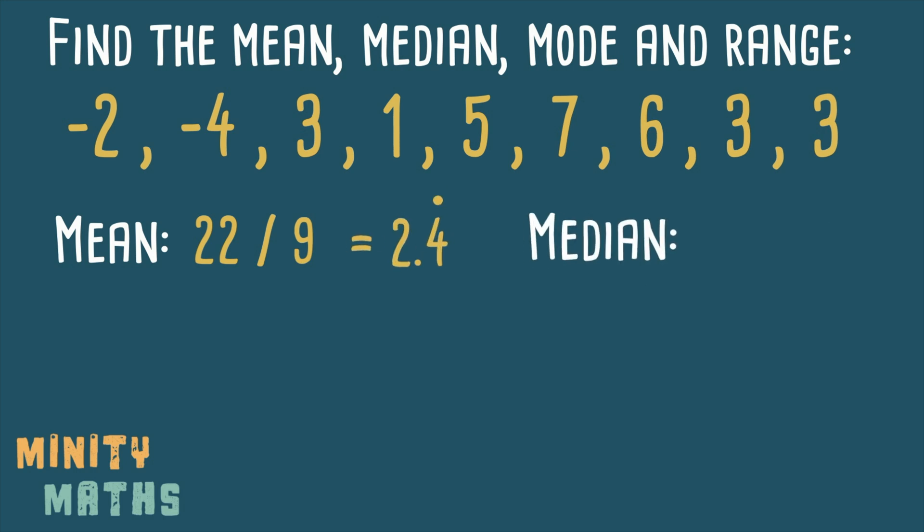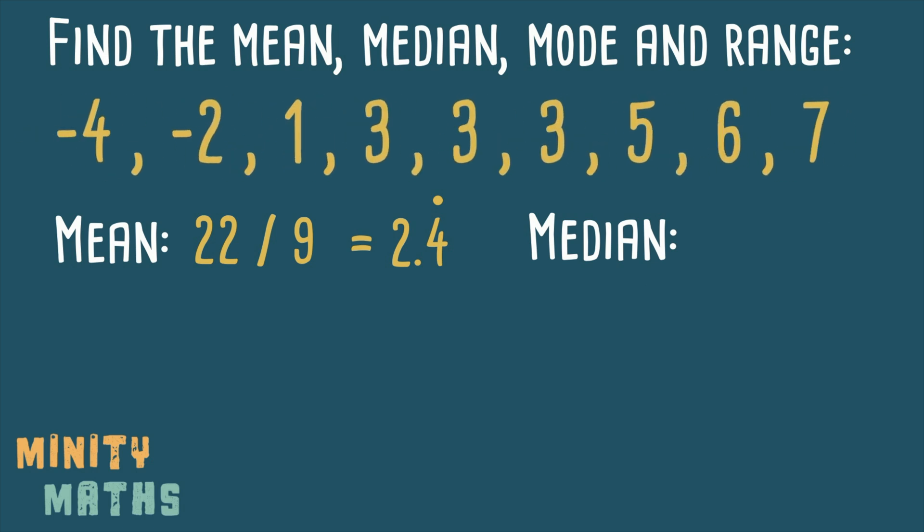To find the median we firstly rearrange the list of numbers so it's in order from smallest to largest. We then find the value which lies in the middle, in this case the number 3.